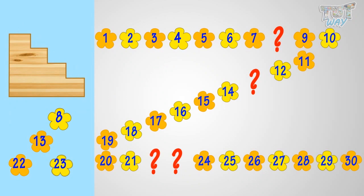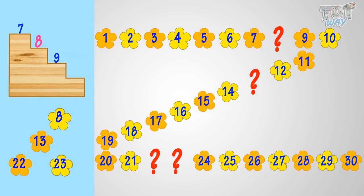Now, let's find out what will come here. We can find the number that comes after 7, or a number that comes before 9. For a number that comes after 7, count forward: 7, 8, 9. Yeah! 8 comes after 7.